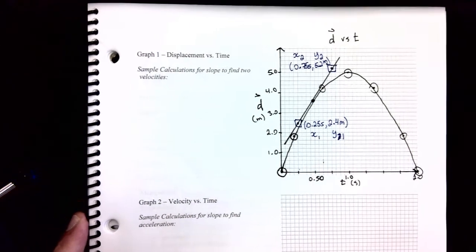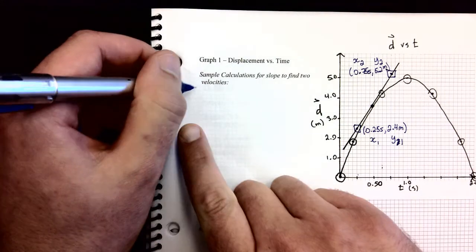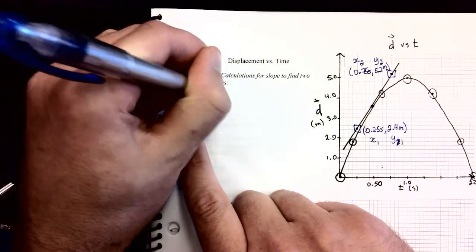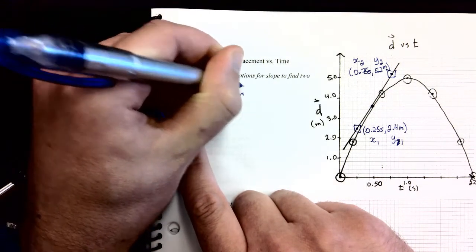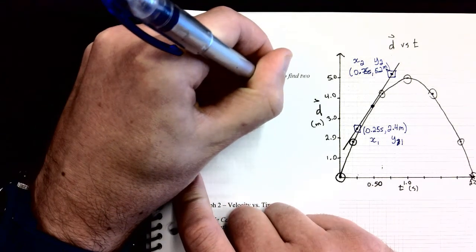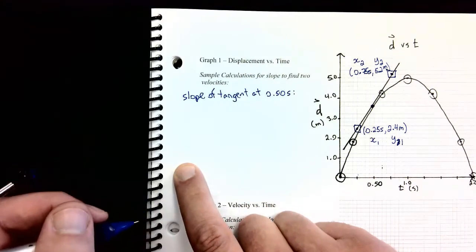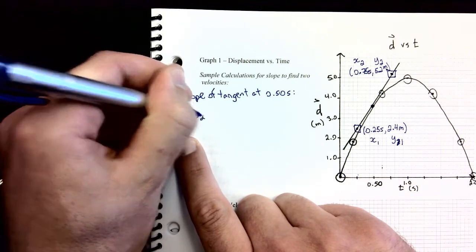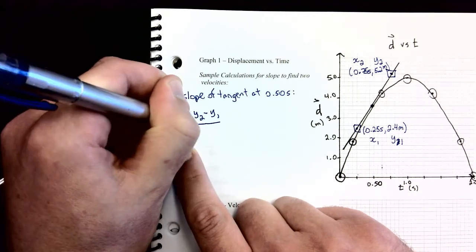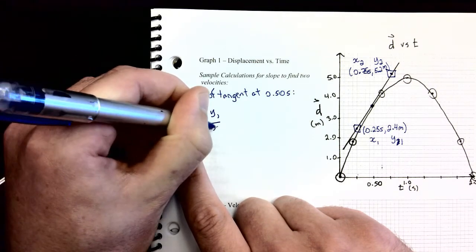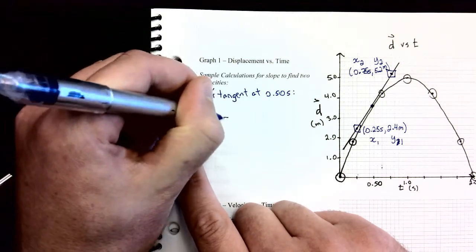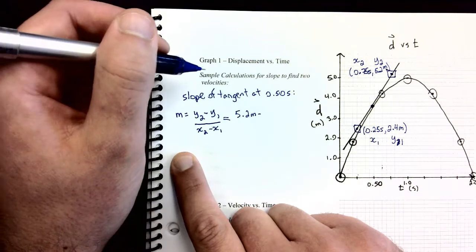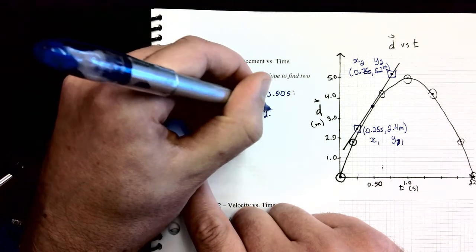And now, off to the side, I'm going to go and find my slope. So I'll sort of say slope of tangent at 0.50 seconds. That's what I'm finding. The slope formula is on your datasheet, so you don't have to worry about remembering that when it comes time to doing your quiz. It's y2 minus y1 over x2 minus x1. And if you did like I did, and you labeled your points, it's pretty easy to go and just plop them into the formula. You don't have to worry too much about mixing them up.